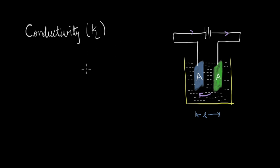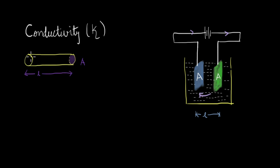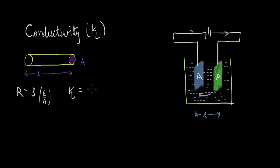We looked at conductivity in detail in an earlier video. There, we compared the flow of electrons in a solution to the flow of electrons in a wire. We know that resistance is given by rho times L over A, where the length and area are shown for the wire, and rho is the resistivity. So we defined conductivity as 1 over resistivity. If we take the length to be 1 cm and the area to be 1 cm², the resistivity is essentially the resistance of a unit volume. By the same reasoning, conductivity — which is the inverse of resistivity — is the conductance of a unit volume.